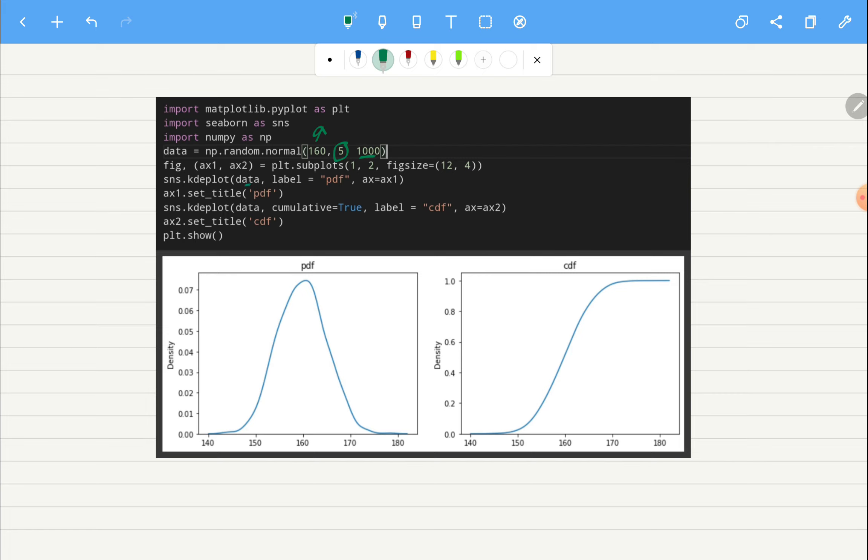For cumulative distribution function you can use kdeplot but there you can have cumulative as equal to true. So let's say if we randomly pick a height, we want to know what will be its probability to be less than 160.